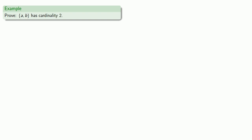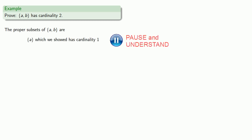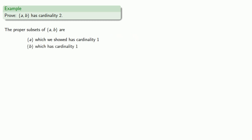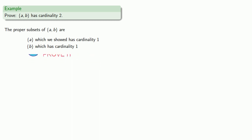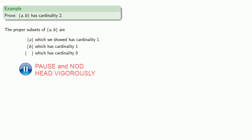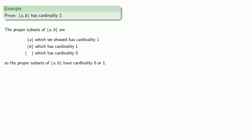Again, we claim that this set has cardinality two. Let's check it out. The proper subsets are: the set containing just A, which we already showed has cardinality one; the set containing just B, which has cardinality one (you should probably prove that); and the set containing nothing, which has cardinality zero. So the proper subsets of this set have cardinality zero or one, and therefore this set has cardinality two.